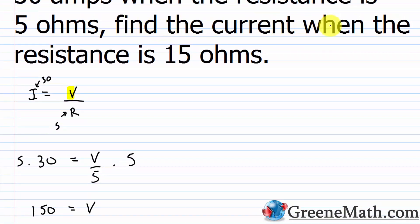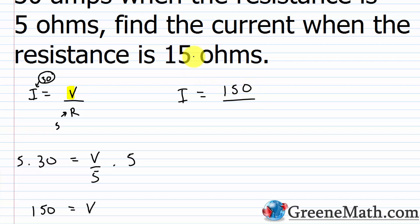In the next scenario, find the current when the resistance is 15 ohms. The resistance goes up, so the current is going to go down — it's inverse variation. We're looking for a value smaller than 30. Plugging in: I equals 150 over 15. So 150 divided by 15 is 10. I equals 10 in this scenario.